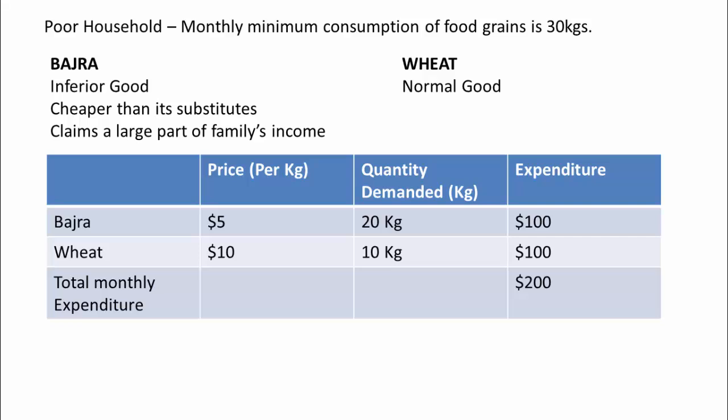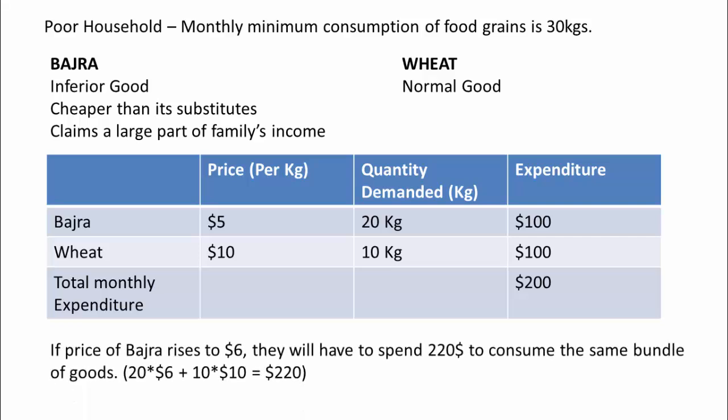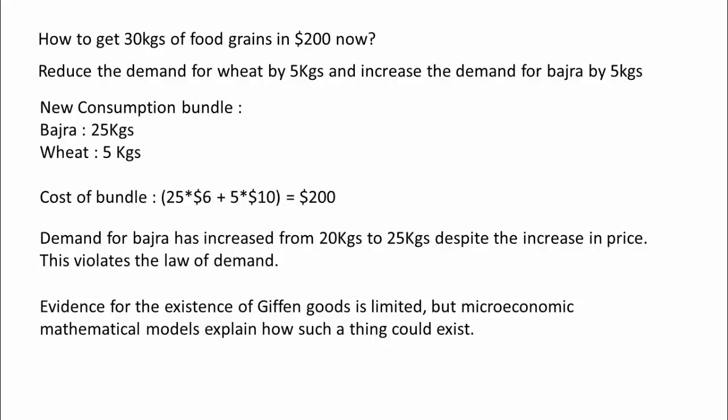So their total monthly expenditure is $200 and this is what they can afford. If the price of Bajra rises to $6, they cannot continue to consume the same bundle as it will now cost $220. So they will have to alter their bundle in such a way that they could get 30 kgs of food grains in $200. To do this, they will have to reduce the demand for wheat by 5 kgs and increase the demand for Bajra by 5 kgs. So now they will consume 25 kgs of Bajra and 5 kgs of wheat, and this will cost them exactly $200.